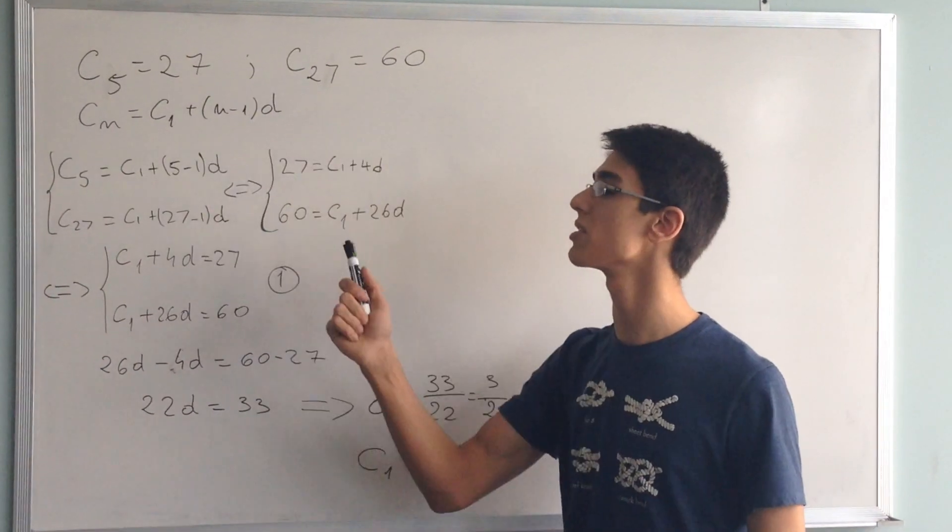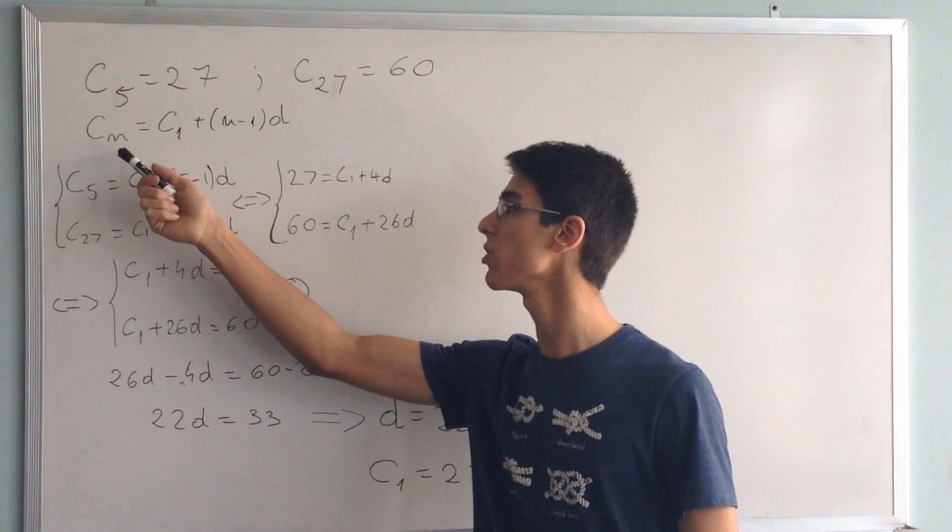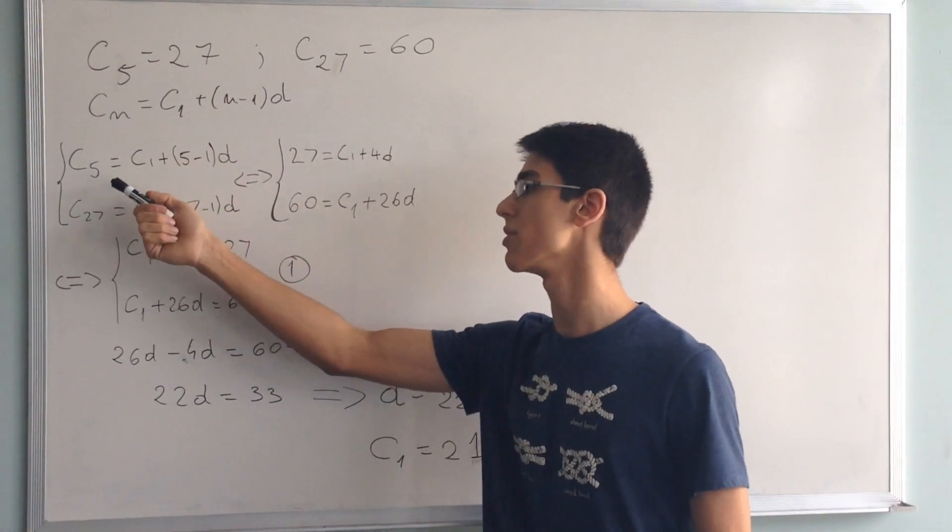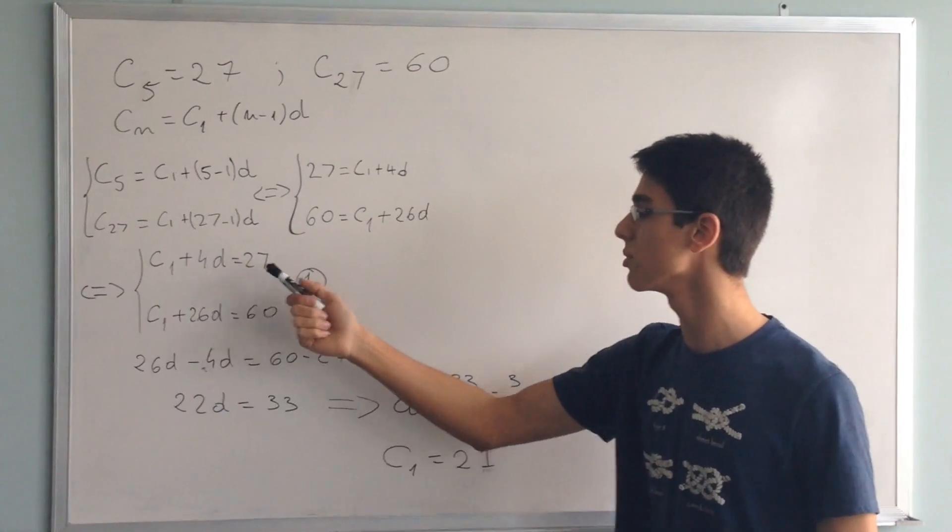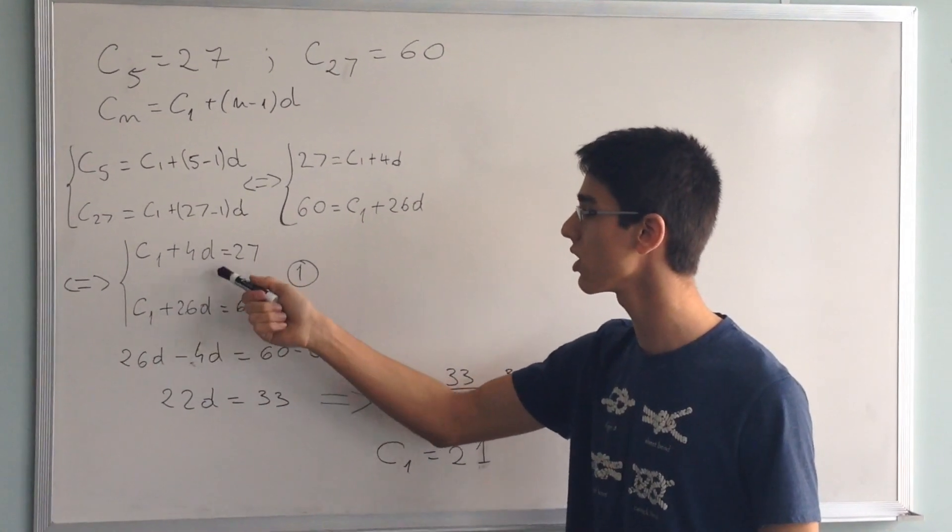Knowing C5 and C27, we usually use the general term formula to express C5 and C27 as a system of equations. This system of equations has two equations and two unknowns.